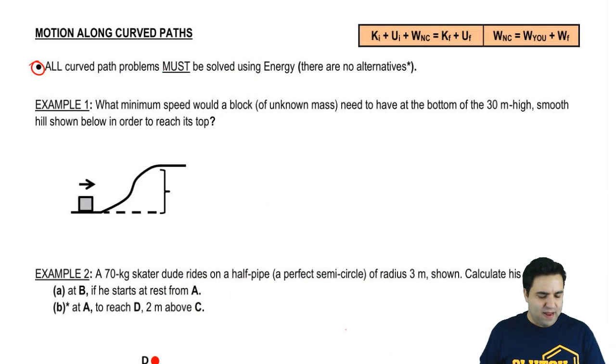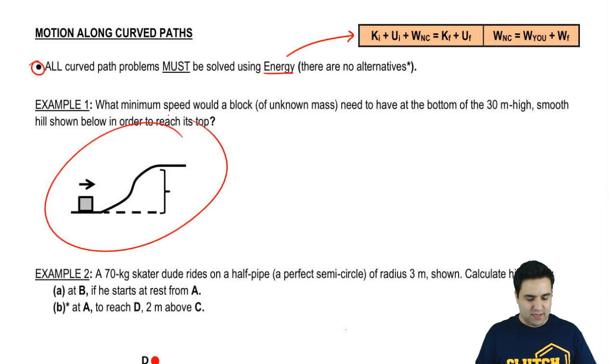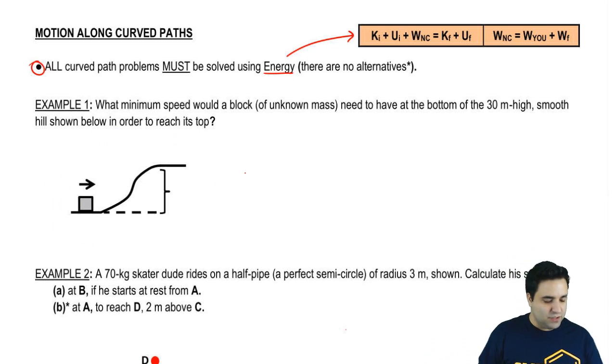So it says here all curved path problems must be solved using energy. In other words, using the big energy equation. Notice how you're going in the curved path, it has to be done using energy. I put here in parenthesis that there are no alternatives to really reinforce that as soon as you see a curved path, you will jump immediately to the energy equation.